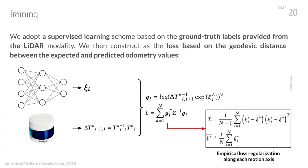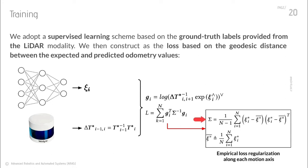In order to train our models, we use the LiDAR ground truth available in the KITTI odometry dataset. For each inference in the training batch, we map the output of the model to odometry transformations and formulate the geodesic distance between these predictions and the ground truth expected values. Finally, we scale each motion axis using the empirical scale matrix computed as the empirical covariance of odometry steps in the dataset.